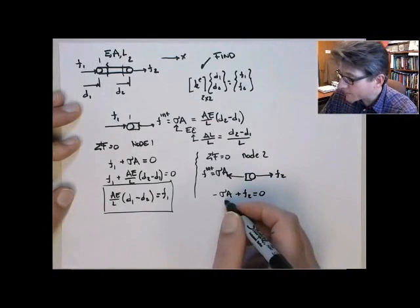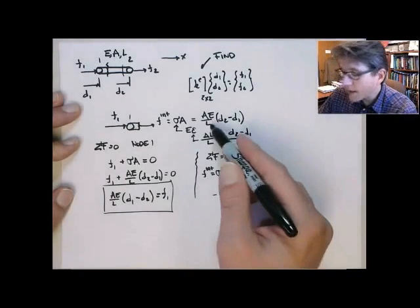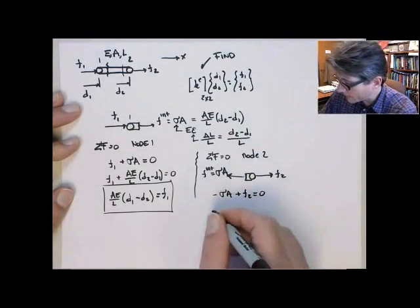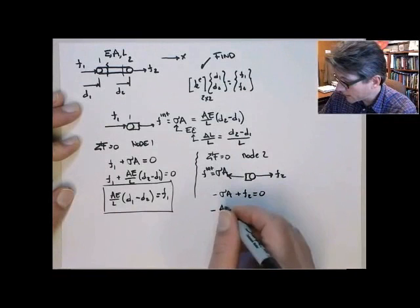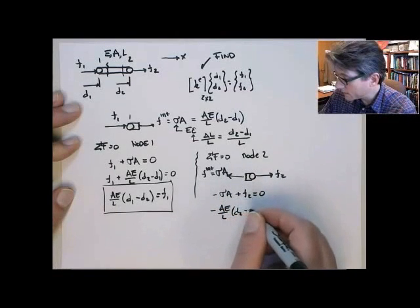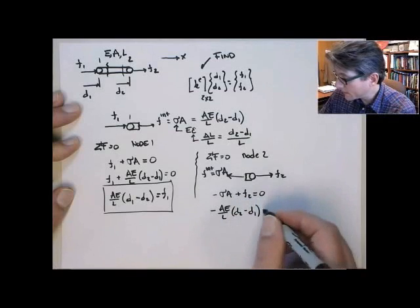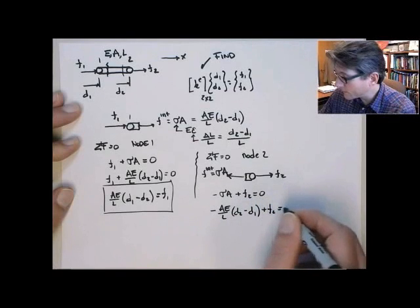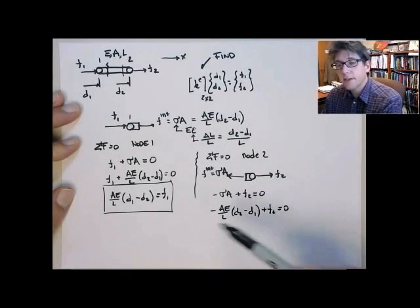And substituting in for sigma A, AE on L, D2 minus D1, we get minus AE on L, D2 minus D1, plus F2 is equal to 0. So now we'll get into the same form here,